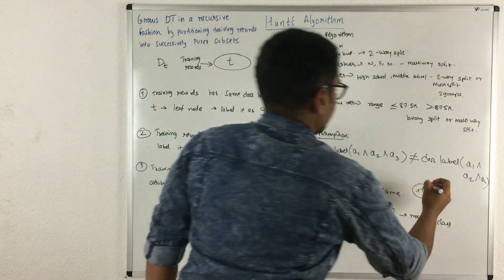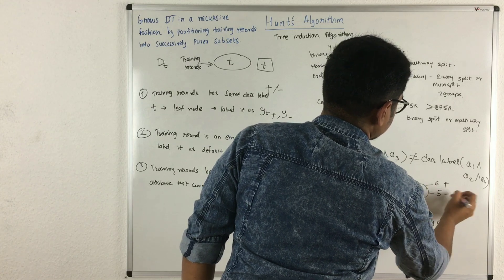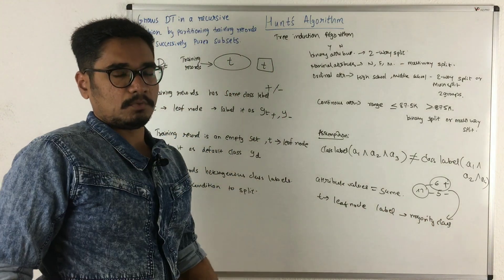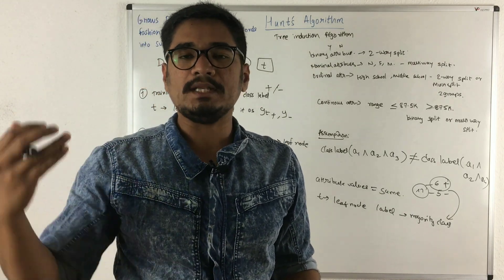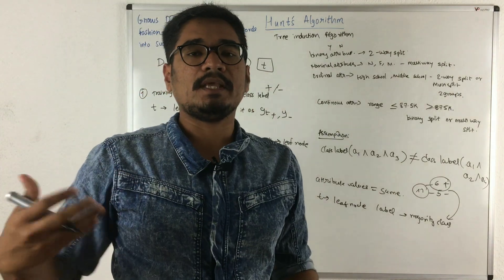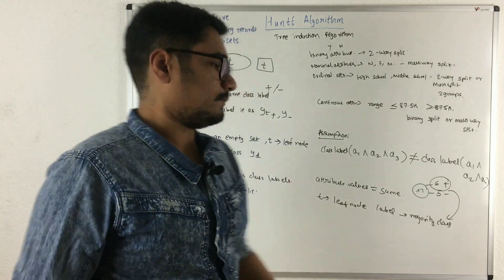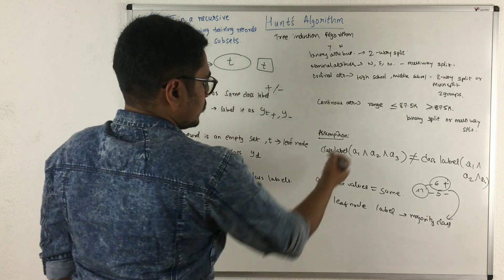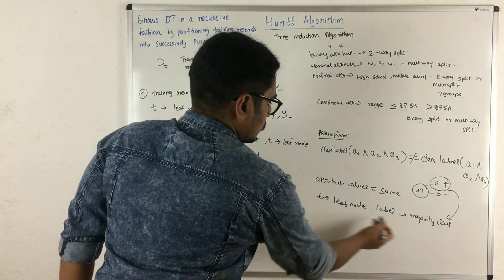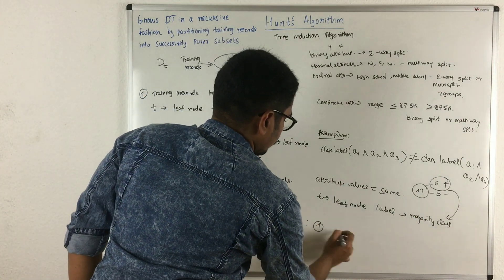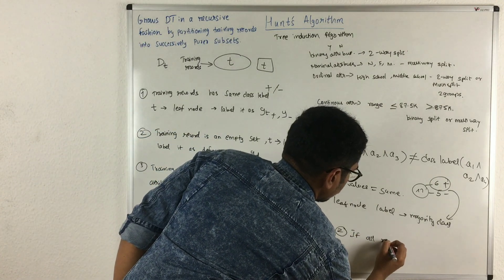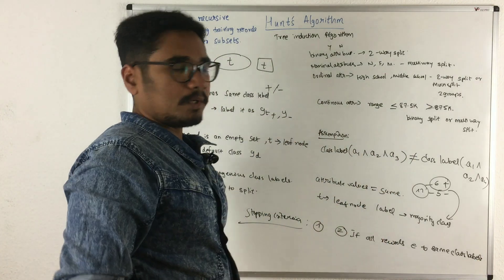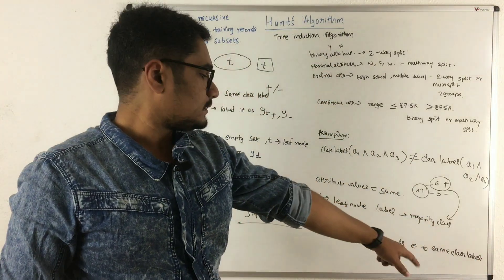For example, if you have 11 instances — 6 positive and 5 negative — whichever is the majority, you assign that class label. The stopping criteria of Hunt's algorithm are very important because since it's recursive, it can continuously consume memory and space. The two stopping conditions are: first, if all attribute values are the same, the node is not further divided; second, if all records belong to the same class label after partitioning into subsets, the algorithm stops.